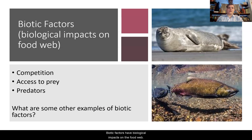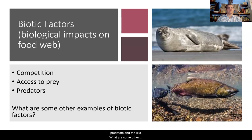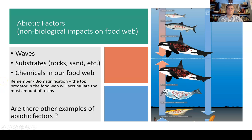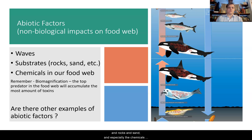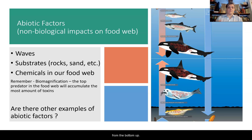Biotic factors have biological impacts on the food web. Every action that is made by a living organism will affect something else. This could include competition, cooperation, access to prey, predators, and the like. What are some other examples of biotic factors that you can think of? We'll also have to look at abiotic factors — the non-biological impacts on the food web. Those are things like waves, rocks, and sand, and especially the chemicals in our food web. Remember, biomagnification means that the predator at the top of the food web is going to accumulate the most amount of toxins from the bottom up. So what are the other examples of abiotic factors that you can think of?